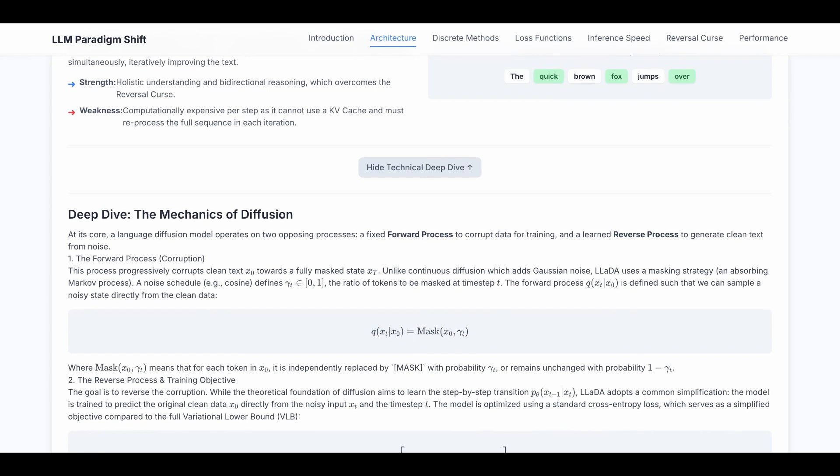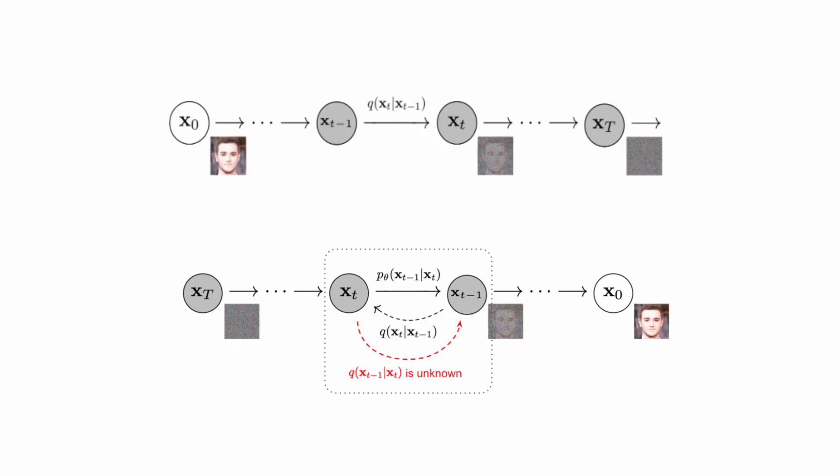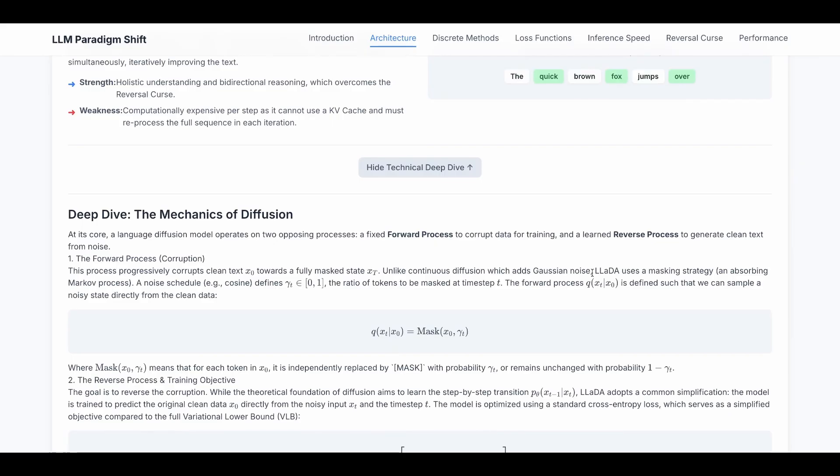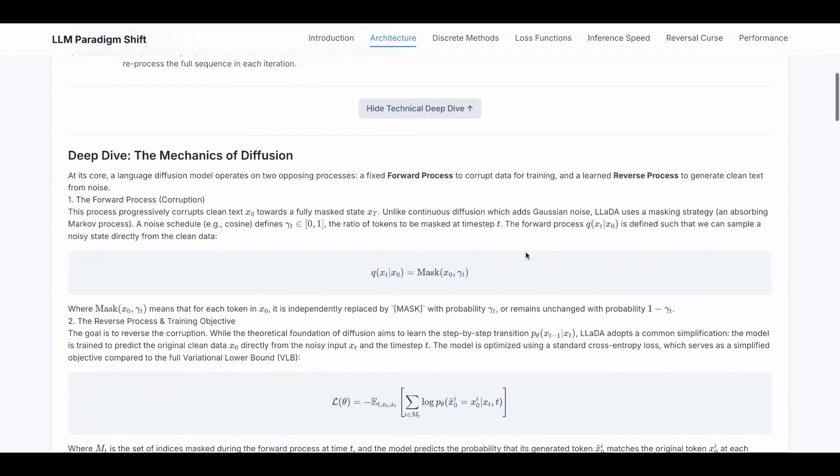This is the technical deep dive of the diffusion approach. At its core, the language diffusion model operates on two opposing processes: a fixed forward process to corrupt the data for training, and a learned reverse process to generate clean text from noise.